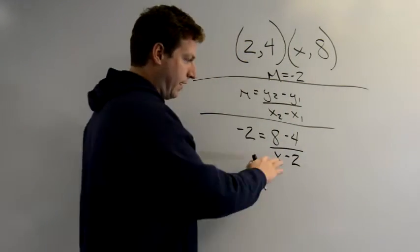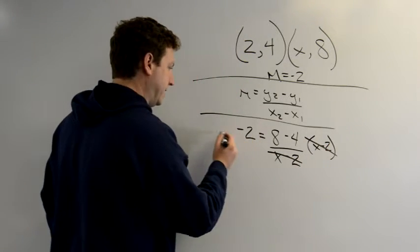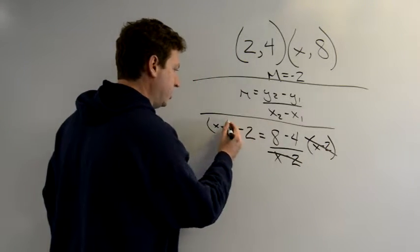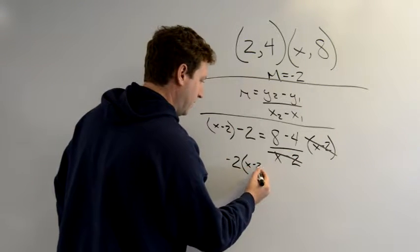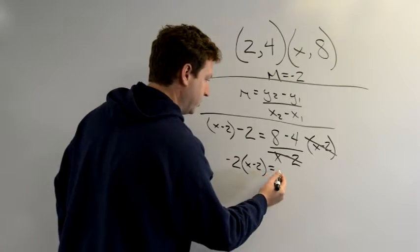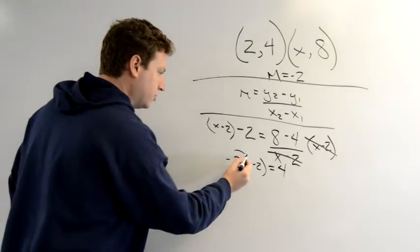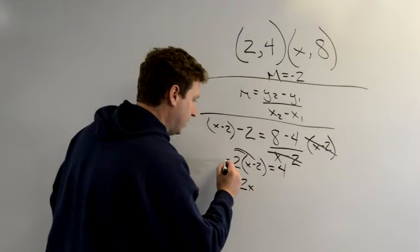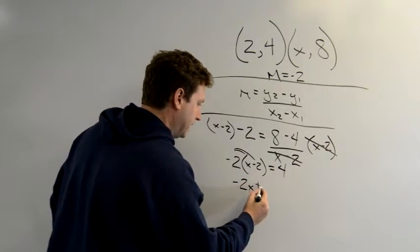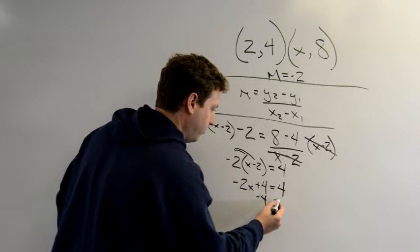At this point, I have an x minus 2 on the bottom, so if I just multiply both sides by x minus 2, I can clear that out. On this side, I now get negative 2 times x minus 2 equals 8 minus 4. I'm just going to rewrite that as 4. Distributive property, negative 2x, negative and a negative, positive 4 equals 4. Minus my 4 from both sides.